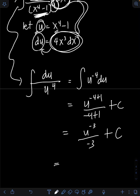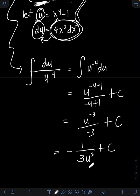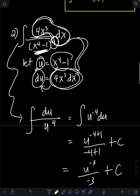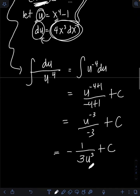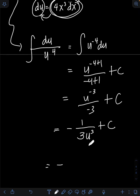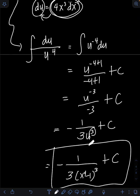Simplifying without the negative exponent, that's the same as negative 1 over 3, times u to the 3rd, plus C. Finally, transforming back u in terms of x — u equals x to the 4th minus 1 — so the final answer is negative 1 over 3 times quantity x to the 4th minus 1, raised to the 3rd power, plus C.